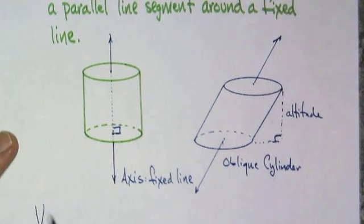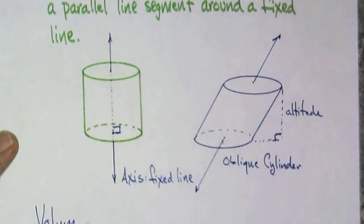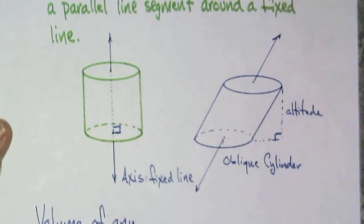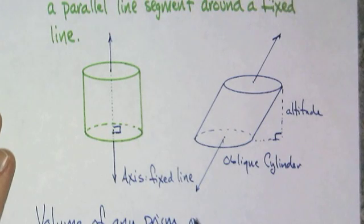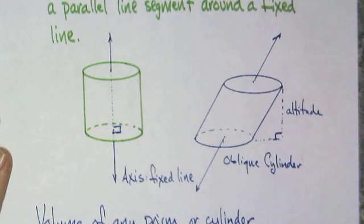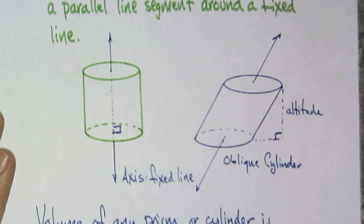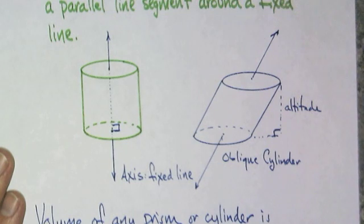So, or in other words, the volume of any prism or cylinder is the area of the base multiplied by the height.